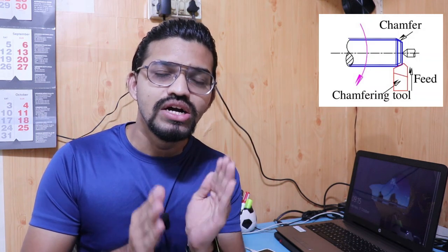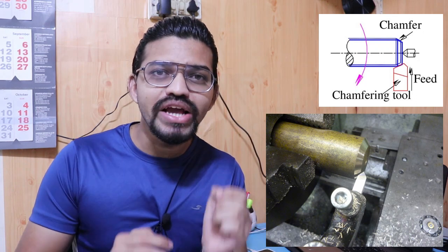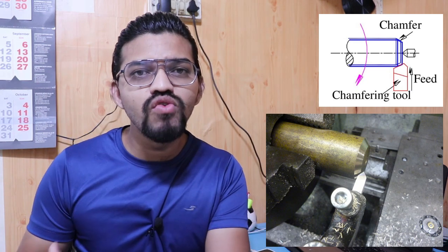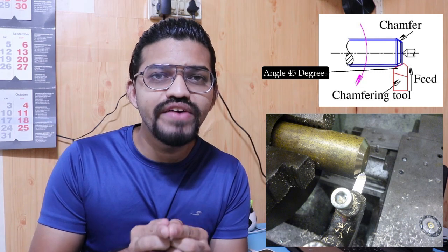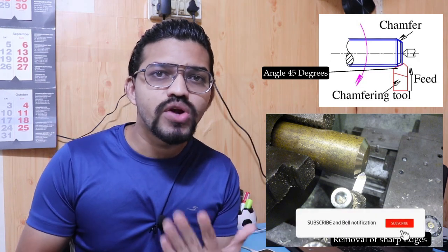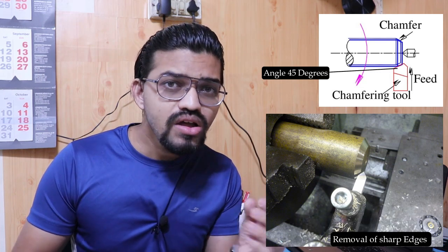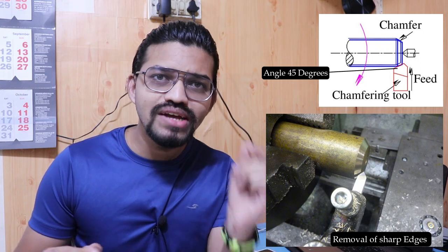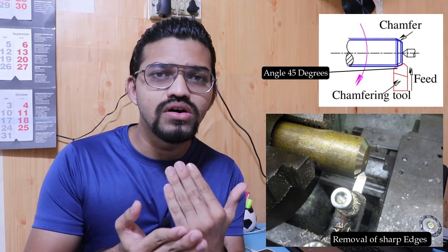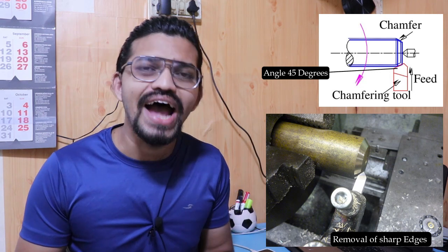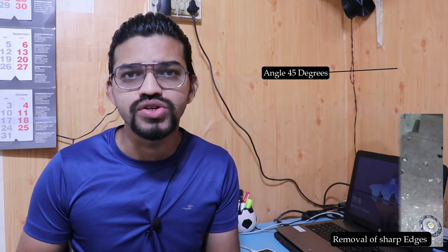The chamfering operation involves making a 45-degree cut on the sharp edges of a workpiece. For a cylindrical workpiece, the cutting tool is set to 45 degrees and the sharp end of the workpiece is cut away. Sharp edges can cause hazards during operation or during mating with another part — particularly in interchangeable assemblies — so chamfering is required. It also improves the aesthetic appearance of the workpiece.